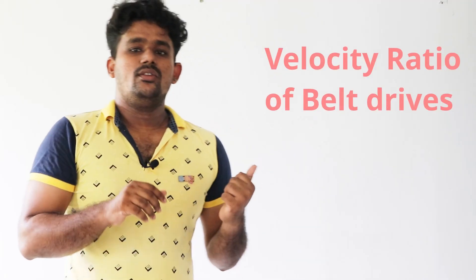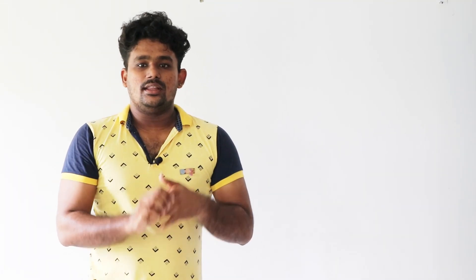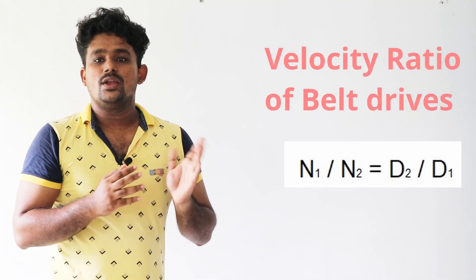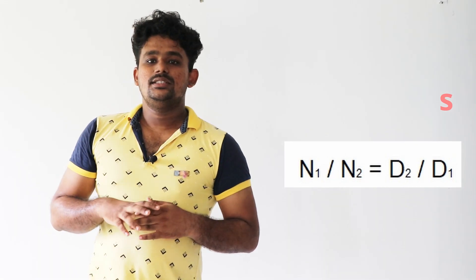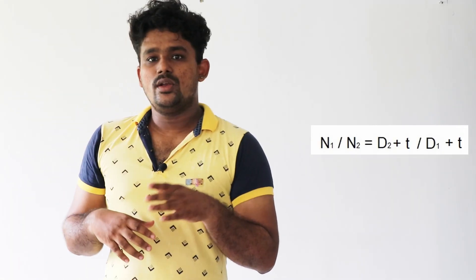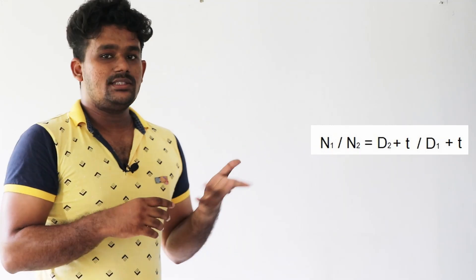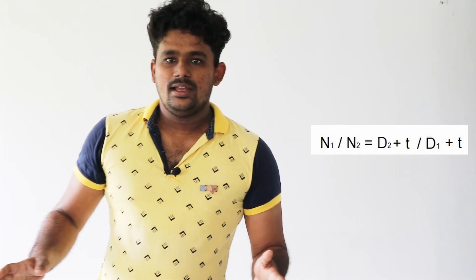An important topic is the velocity ratio of belt drives. For two pulleys, if N1 and N2 are the RPM of the driver and driven shafts, and D1 and D2 are their diameters, then the velocity ratio is N1/N2 = D2/D1. Accounting for belt thickness t, it becomes N1/N2 = (D2 + t)/(D1 + t).